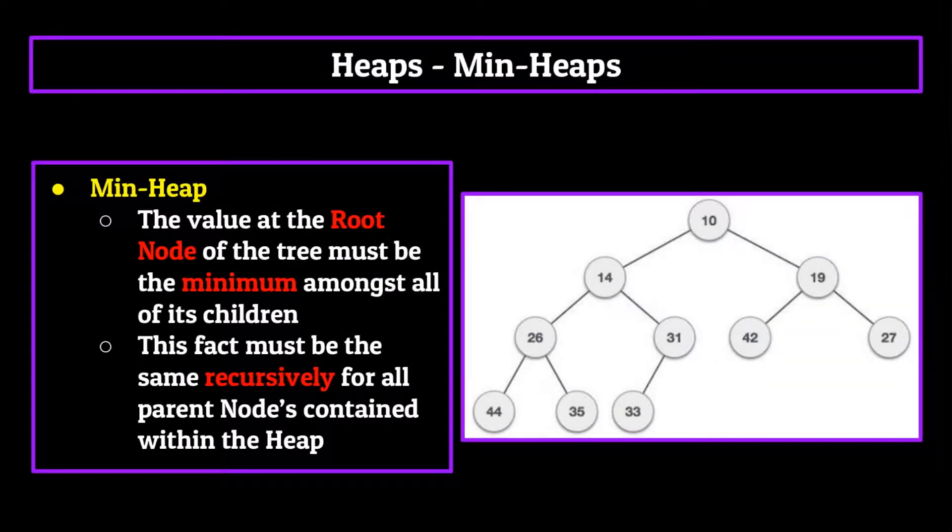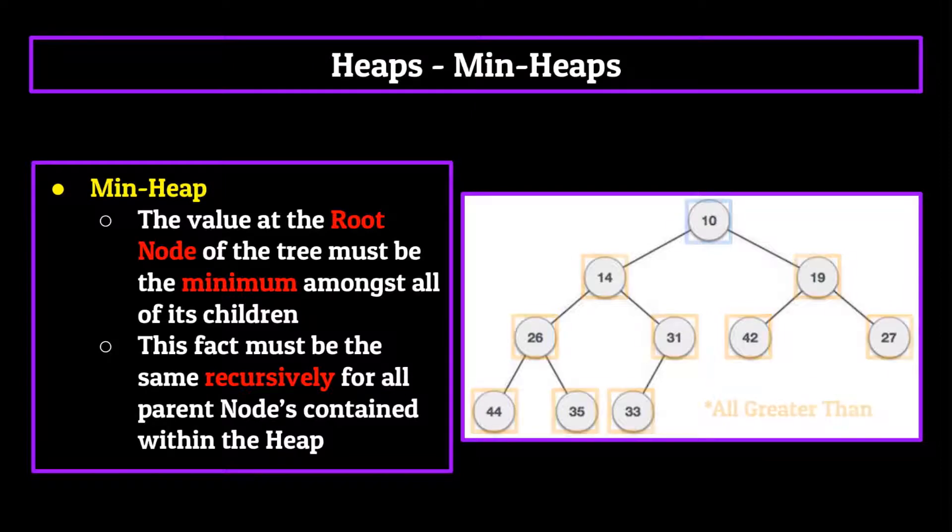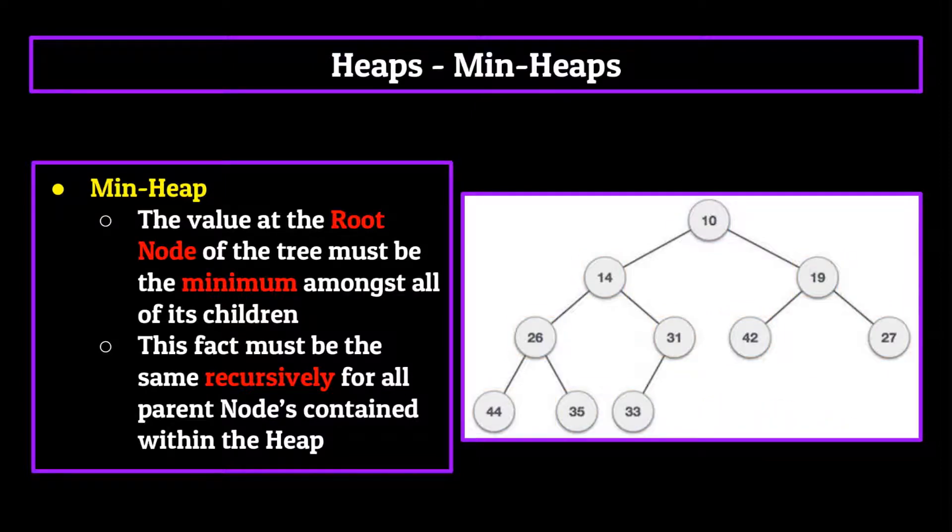In a min heap, the value at the root node of the tree must be the minimum amongst all of its children. And this fact must be recursively the same for all parent nodes contained within the heap. So each parent node must have a value lower than all of its child nodes. As you can see from our example on the screen now, 10 is the root node and also the lowest value within the heap. Additionally, if we pick any parent node on the heap and look at its children and their children and so on, that parent node will have the lowest value of them all.